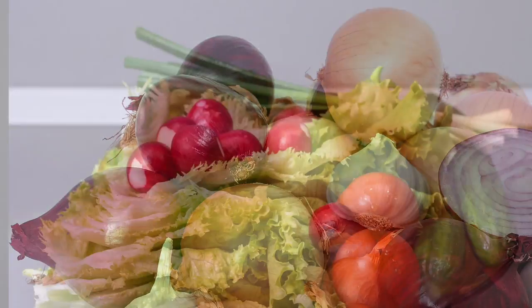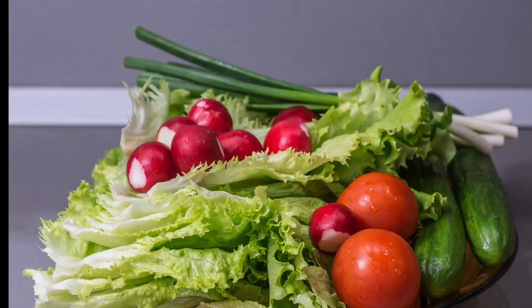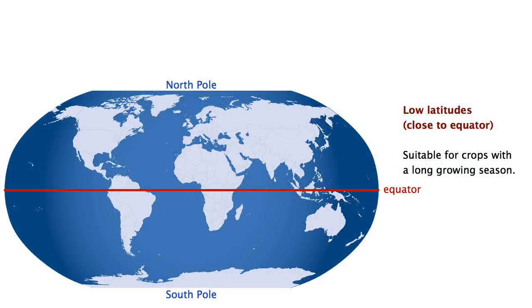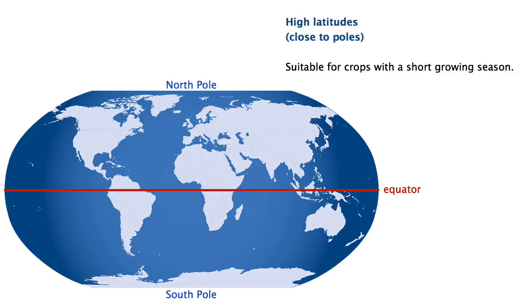Other crops have short growing seasons and can be harvested multiple times per year. They include oats, lettuce, cucumbers and radishes. Crops with a long growing season tend to grow better near the equator, where the temperature and rainfall are decently high all year round. Crops with a short growing season can be grown at higher latitudes because they can be sown, grown and harvested in between periods of frost.